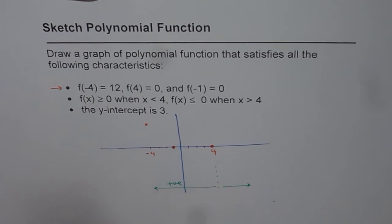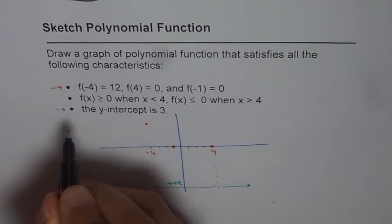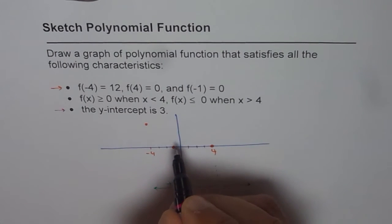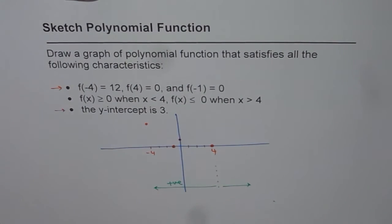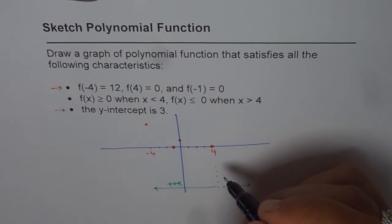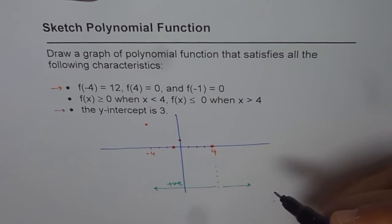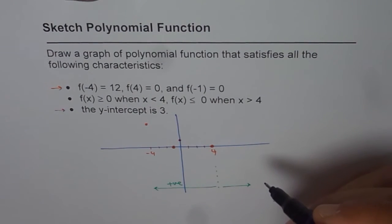The last one given to us is the y-intercept. The y-intercept is 3, so let us mark that somewhere here. Now, how do we sketch this kind of graph? As you can see, we could sketch many graphs which will fit into these criteria. Polynomial functions are continuous, smooth curves without any cusps or corners — those are a few basic things we should consider.